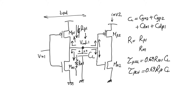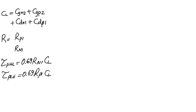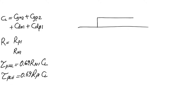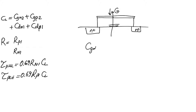The remaining problem is to find expressions for C_gate, C_drain, and R. C_gate is the easiest — it corresponds directly to the MOS gate capacitance. Looking at the gate terminal, the capacitance through the oxide is C_gate = C_oxide * W * L. Here C_oxide = ε_oxide / T_oxide, where ε_oxide is a material property and T_oxide is a process property, while W and L are design parameters.